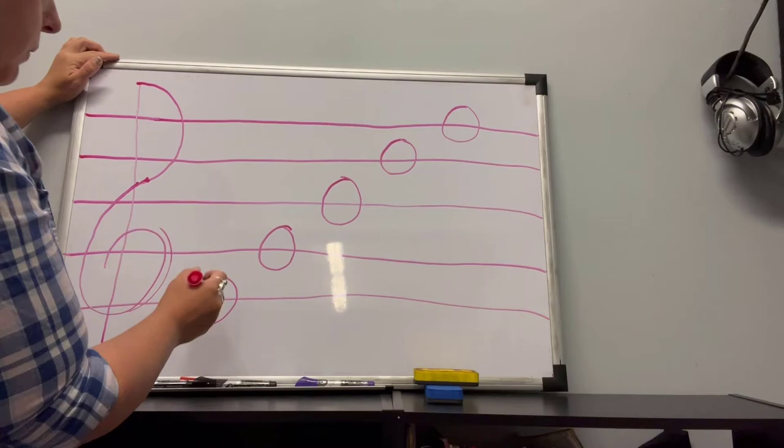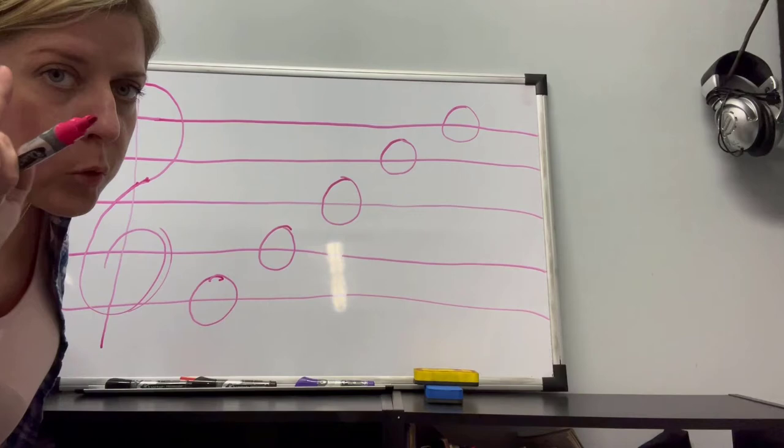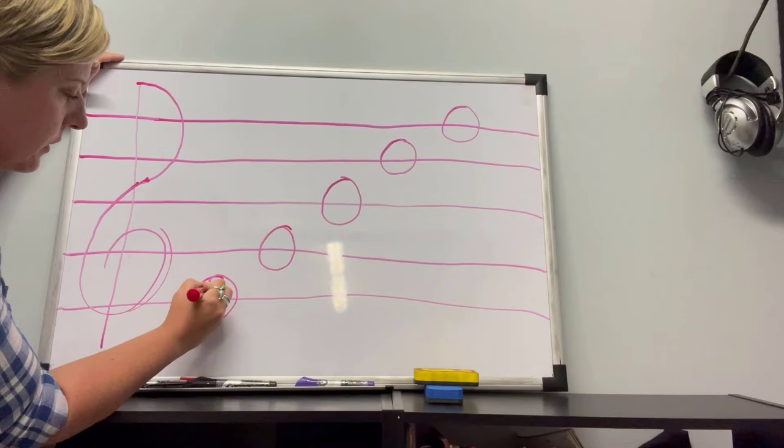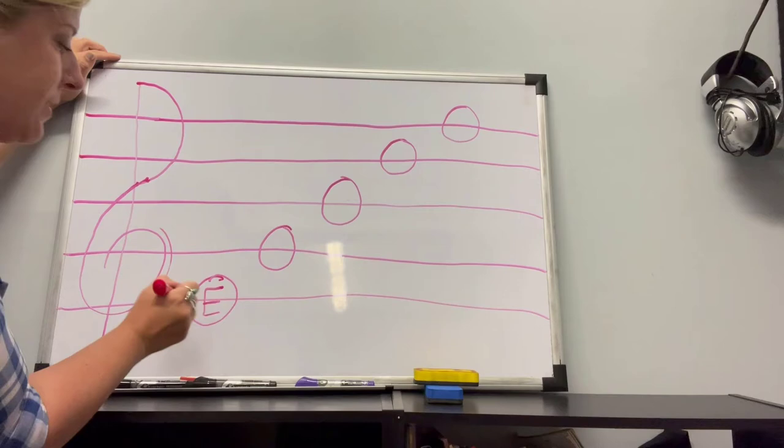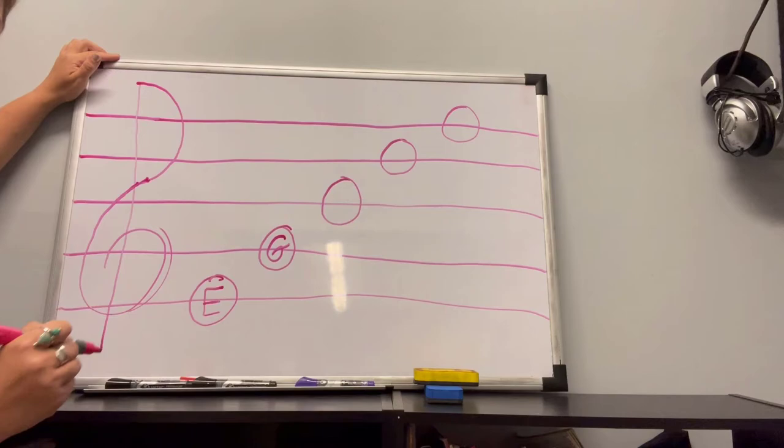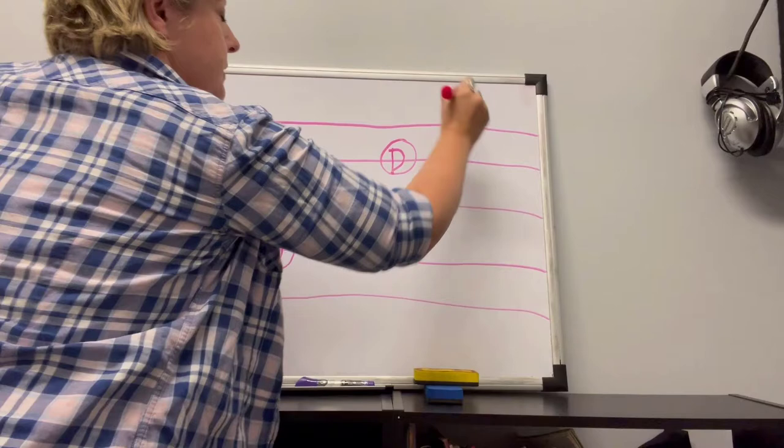What we're gonna do now is label these notes. They each have a letter name and I'm gonna show you how to remember what the letter names are. This bottom one, I like to just write it right in the note: capital E. Whenever you see a note on this line it's gonna be an E. It could be a half note, a quarter note, a whole note, still an E. If it's on this line: G. This line: B. This line: D. And this final line is F.